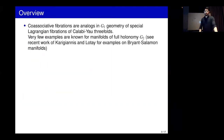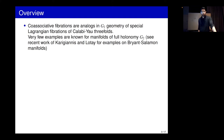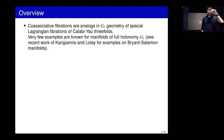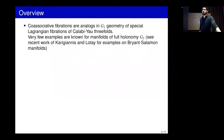Co-associative fibrations are analogs of special Lagrangian fibrations of Calabi-Yau threefolds. Co-associative submanifolds are calibrated submanifolds of G2 manifolds. These things are expected to exist but are very hard to construct — in fact, we don't know any examples for compact G2 manifolds. For non-trivial examples on non-compact manifolds, you can see recent work of Corti-Haskins on the Bryant-Salamon manifolds, which are historically the first non-trivial complete manifolds of G2 holonomy. There are three of them; they are non-compact asymptotically conical manifolds, and recently people found examples of co-associative fibrations on them.